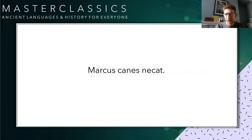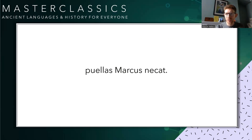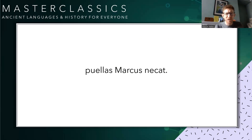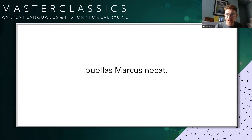So Marcos canes necat is: Marcos kills the dogs. Have a look at this example and see if you can work it out. Hopefully you came up with: Marcus kills the girls. It can't be the girls killing Marcus because they're in the accusative — having action done to them — and Marcus is in the nominative. Also, it can't be the girls killing Marcus because we'd have to change the verb. The verb is in the third person singular, necat. If it was more than one person doing the killing, we'd have to change that to necant. Always looking at that verb first is a very, very good idea.